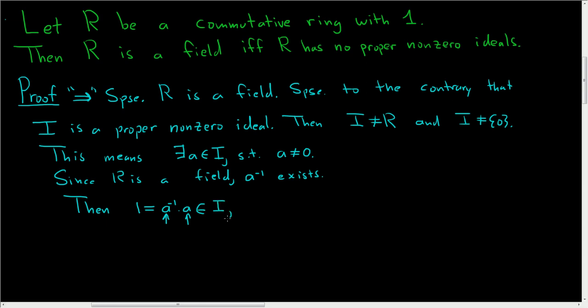So I contains 1. Again, for all R in R, we can write R equals R times 1. This is an element in R, this is an element in I. And so because I is an ideal, the product is in I. So every single R in capital R is also in capital I. So I must be the whole ring, and that's a contradiction.